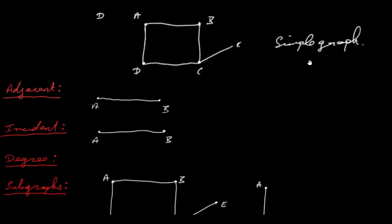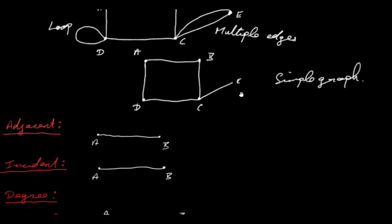Next we have the degree of a vertex. The degree of a vertex is the number of edges incident with that vertex, and each loop is counted twice. For example, vertex D here has degree 2 because it has two edges incident with it. Vertex C here has degree 3 because it has three edges incident with it. Now D up here has a loop, and since the loop is counted twice, the degree of D there would be 4.